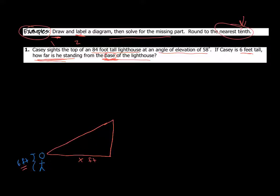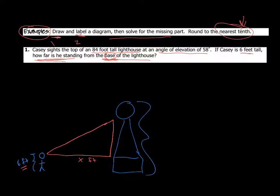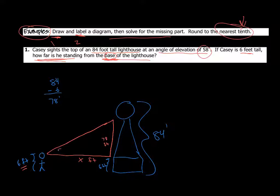Now the lighthouse is 84 feet tall, but there's already six feet accounted for at Casey's eye level. So we come off to the side and say 84 minus 6 is going to give us 78 feet. So this piece is 78 feet — not that full vertical piece. So we have 78, we have x, and they also told us the angle of elevation was 58 degrees.